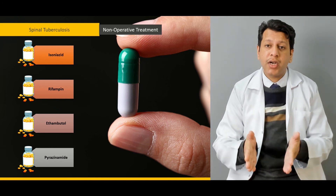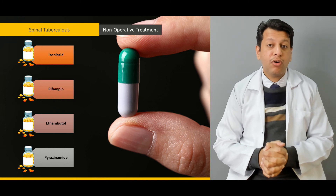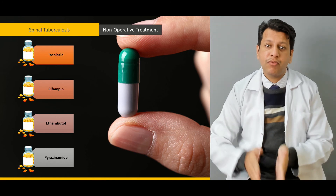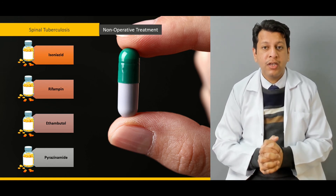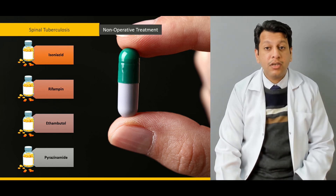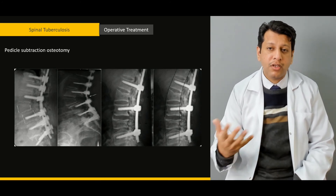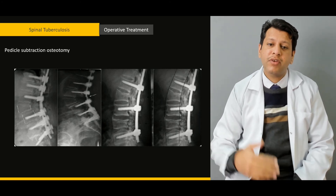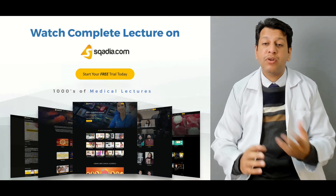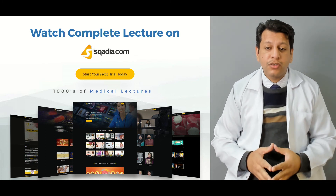Starting from medication therapy — what types of anti-tuberculous drugs are available, how to administer them, and what the treatment regimen is for the first two months and then from nine to eighteen months. We'll then discuss surgical options for spinal TB, covering different procedures such as pedicle fixation with corpectomy, strut grafting, pedicle subtraction osteotomies, multiple laminotomies, or foraminotomies.